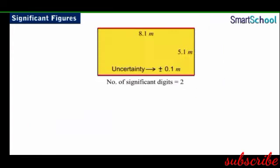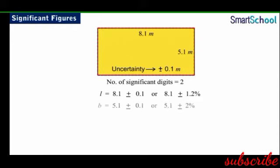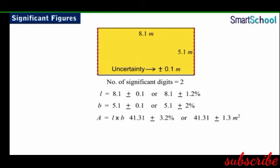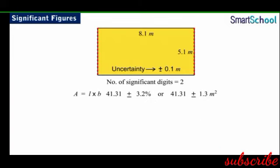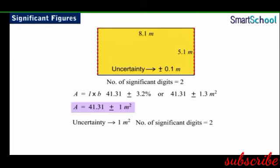For example, the length can be written as 8.1 ± 0.1 m or 8.1 ± 1.2%, and the breadth as 5.1 ± 0.1 m or 5.1 ± 2%. Using the combination of errors rule, the area of the field calculated as the product of these two quantities would be 41.31 ± 3.2%, or 41.31 ± 1.3 square meters. We can report this as 41 ± 1 m², where 1 m² is the error in the result. Thus, the result also has two significant digits, the same as the original data.